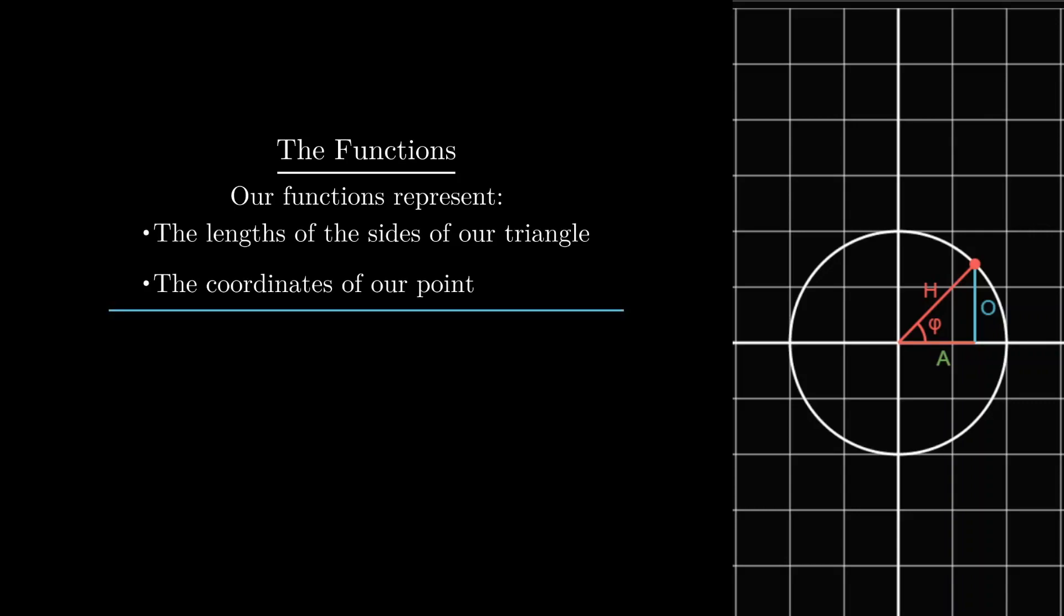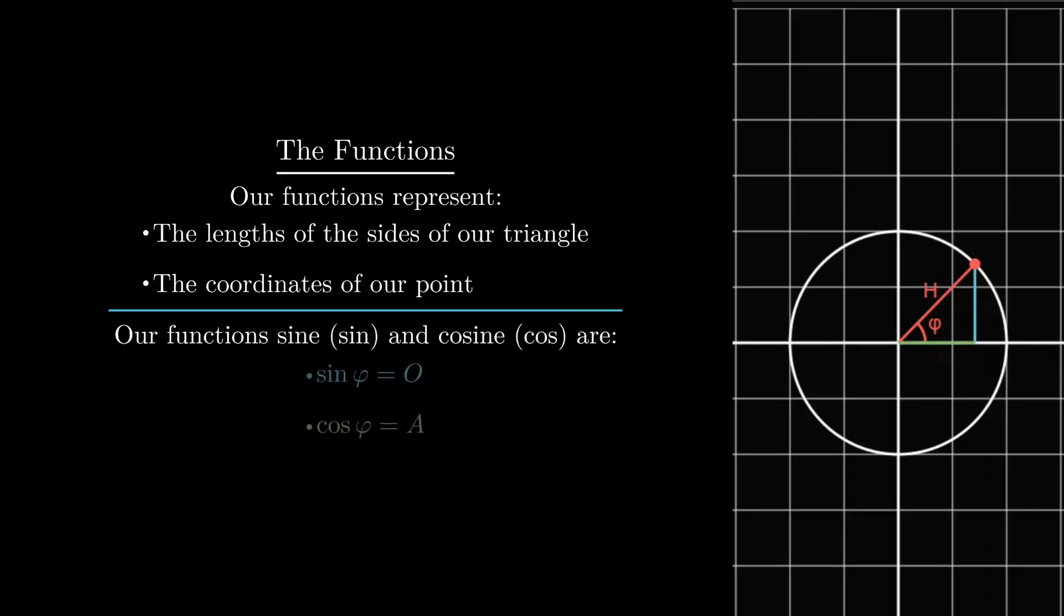But back to our setup, the trig functions are actually just the lengths of the sides of this triangle, or the x and y coordinates of a rotating point. We call the length of the adjacent cosine phi, which is the same as the x coordinate of our point, and we call the length of the opposite sine of phi, which is the same as the y coordinate of our point.